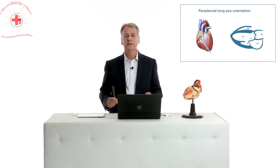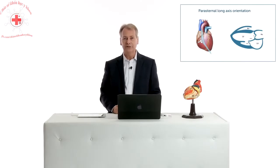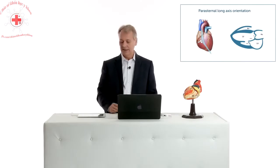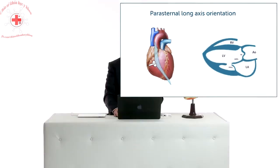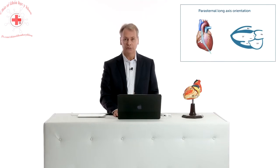Of course the key structures you will see are the left ventricle, the right ventricle, the aorta, the aortic valve, the mitral valve, and the left atrium. But if you want to become a true expert there's a lot more you can see if you use small variations of the parasternal long axis view.